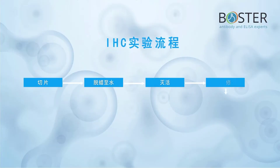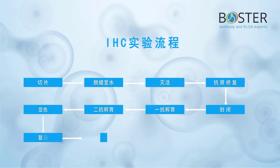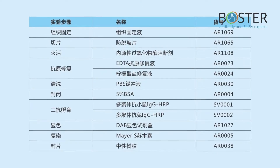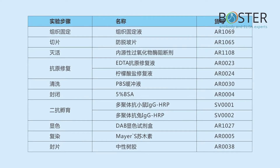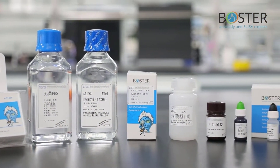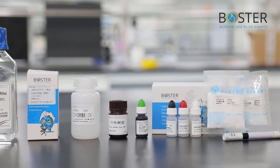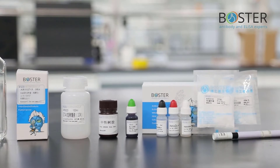First, let's take a look at what a complete histochemical experiment process is like. It can be roughly divided into 10 steps: sample fixation, sectioning, de-waxing to water, inactivation, antigen retrieval, blocking, primary antibody incubation, secondary antibody incubation, color development, counter staining, and sealing. These are our Boaster products, used in every step of the immunohistochemistry experiment.